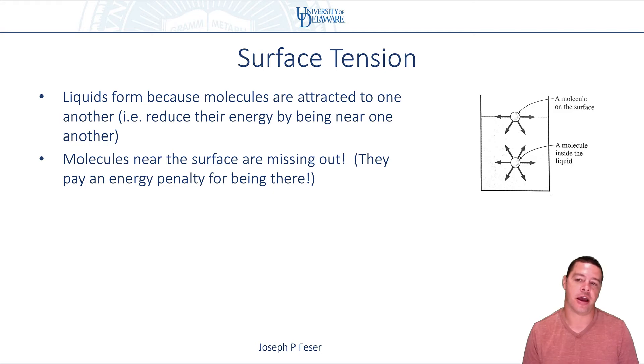And actually, this leads to some really interesting effects. So you can quantify that using a property called surface tension. So the idea is that the energy penalty, or the free energy penalty near the surface associated with a given area of the liquid, is proportional to a quantity called the surface tension.